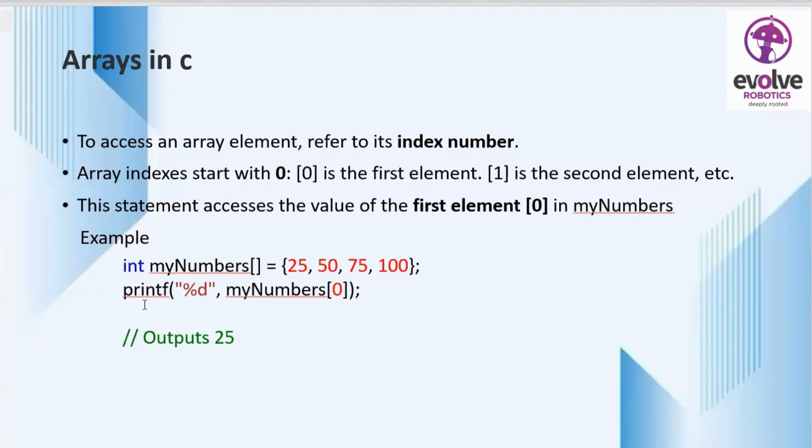For example, we can see an example. Here the data type and array name is myNumbers. We are assigning some values to 4 elements to the array. Then there is a function for printing the first element that is 25. The index number is 0. So 0 is the first element.